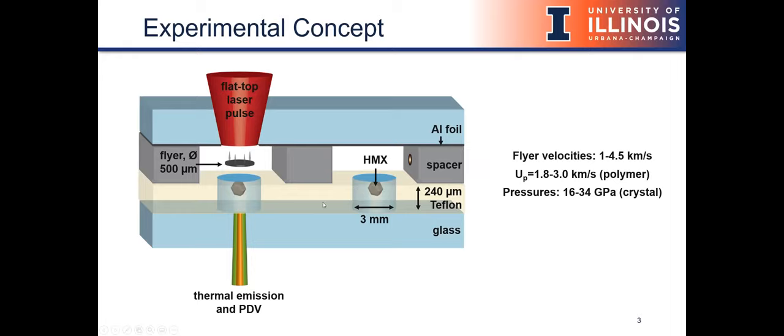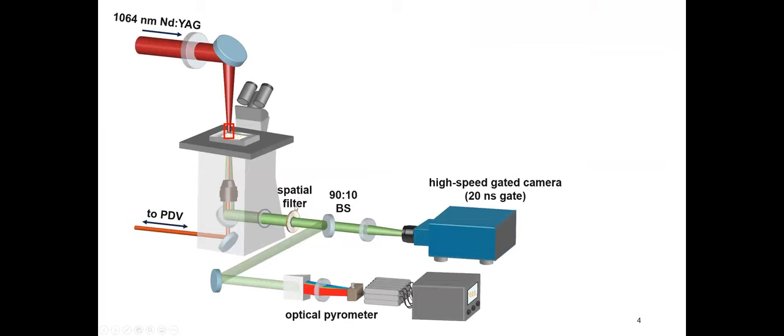In these experiments, we can collect the thermal emission and PDV or photon Doppler velocimetry. We can divert that optical emission to our detectors. Here on the right, I have a few more specs and conditions that our shock compression microscope can reach. Flyer velocities are 1.4 to 5 kilometers per second, and pressures are 16 to 34 gigapascals for the crystals. Now I'm going to take a step back and show you how this sample manifold fits into the rest of the microscope. Here's a cartoon of the microscope. This little red square indicates where that cross sectional view was that I just showed you.